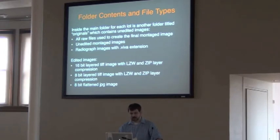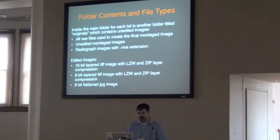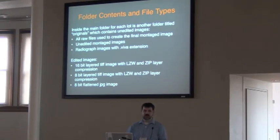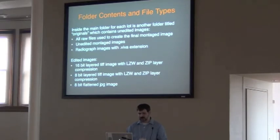We save all the raw files from the montage images, an unedited montage image, and radiograph images — which actually have a BIV extension; that's just the file the software exports initially, and then you can export a TIFF to work on. For edited images, we save a 16-bit layered TIFF with LZW compression, and also an 8-bit layered TIFF with the same compression. The reason for saving both is that the 16-bit has more data, but the 8-bit you can send via email — usually under 20 megabytes — so you can send it to a researcher. Plus an 8-bit flat JPEG.